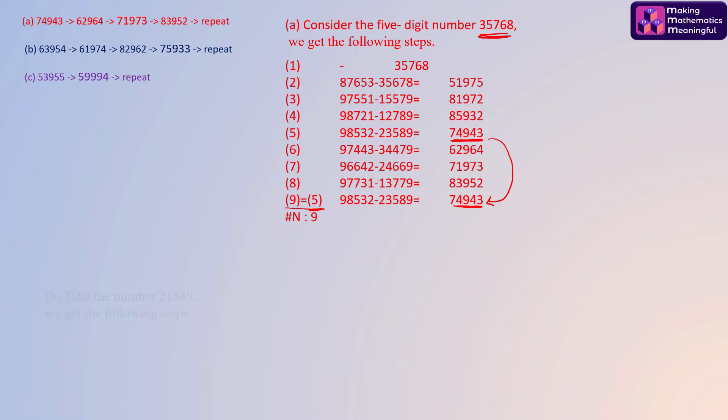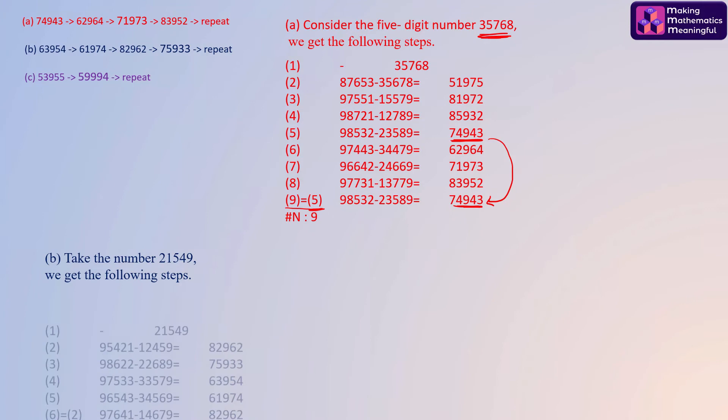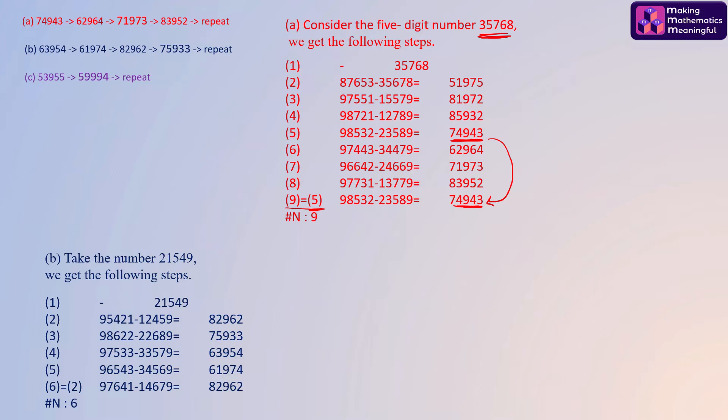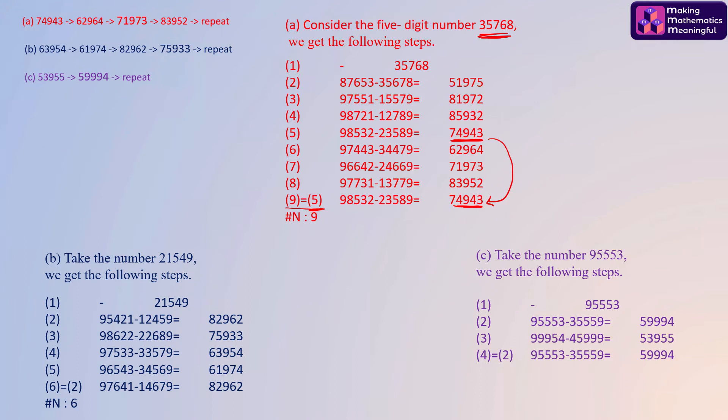Similarly, let's take the number 21549 and here you will find that it matches with case B. For case C the number chosen is 95553, and just after two steps we have the looping of case C as mentioned.